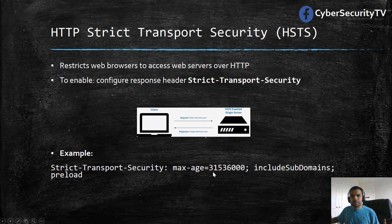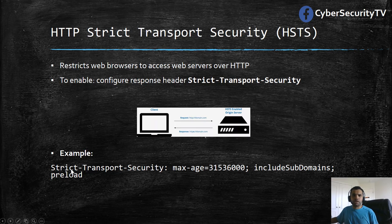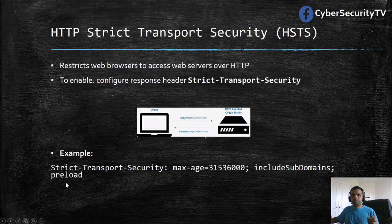You can also include the includeSubDomains parameter — this is optional, but the rule then applies to all subdomains as well, such as abc.example.com or internal.intranet.abc.com. Last but not least is the preload directive. This was initially adopted by Google but has since been adopted by many other browsers. Google maintains an HSTS preload service where, by following certain guidelines and submitting your domain, the browser will never connect to your domain using insecure connections — not even a preflight request. Think of it as a hard-coded list of domains stored in your browser.